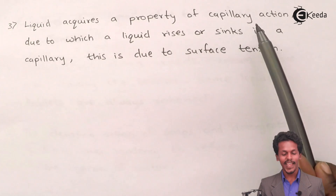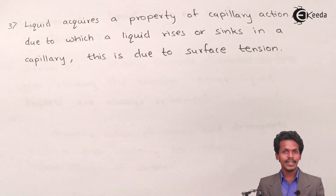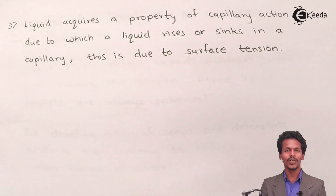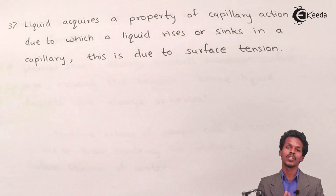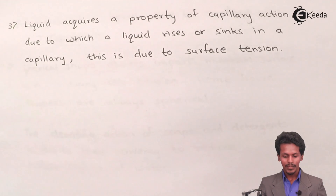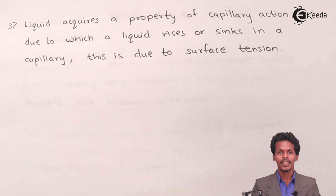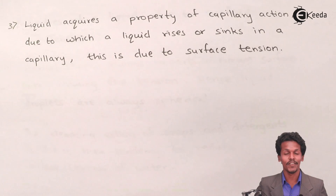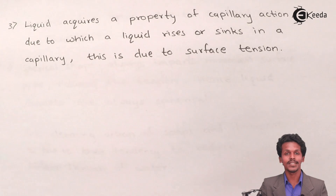Another property is capillary action — a liquid rises or sinks in a capillary tube due to surface tension. If you dip a thin straw with a very small diameter into water, you can observe a small rise of water inside the straw. This rise is due to surface tension itself. These were the main properties related to surface tension. Thank you for watching — share this video with friends and don't forget to subscribe to the channel.